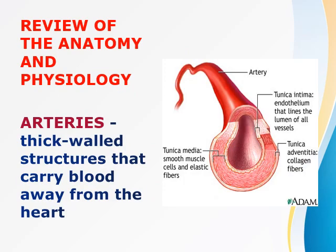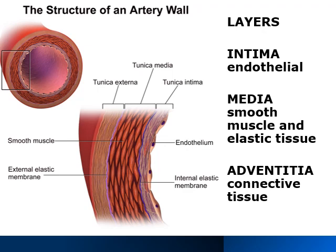To understand our peripheral vascular system, we need to review these terms. Arteries carry oxygenated blood — technically, they carry blood away from the heart, which includes your pulmonary artery. Arteries are divided into three layers: the intima, media, and adventitia. The intima is the innermost layer, composed of endothelial tissues. The media is composed of smooth muscles and elastic tissues. The adventitia is composed of connective tissues.